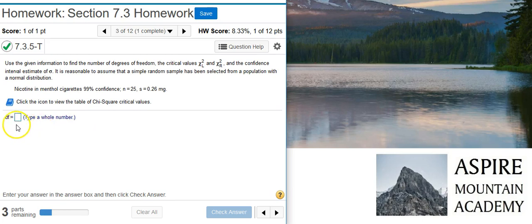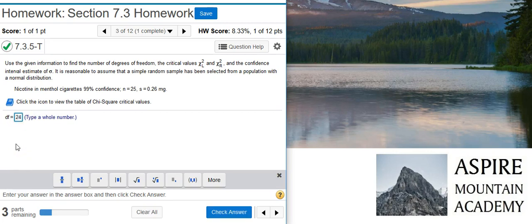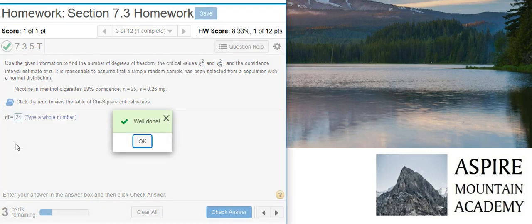The first part is asking us for degrees of freedom. Degrees of freedom is simply one less than the sample size. Here our sample size is 25, so our degrees of freedom will be 24.